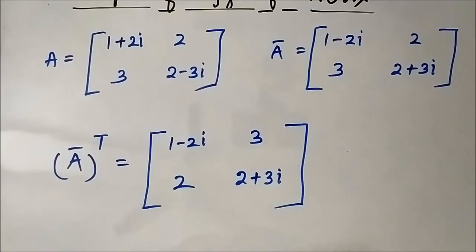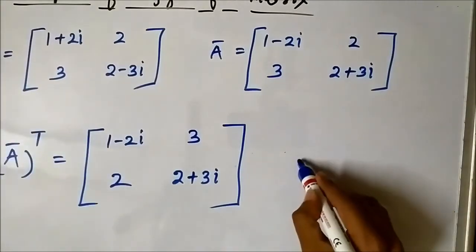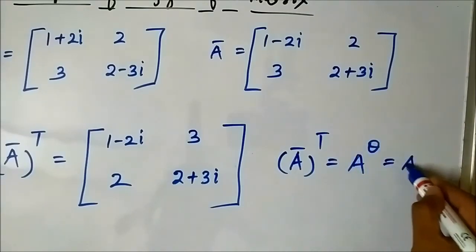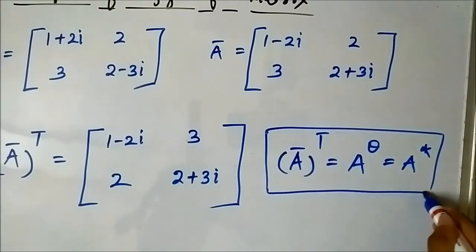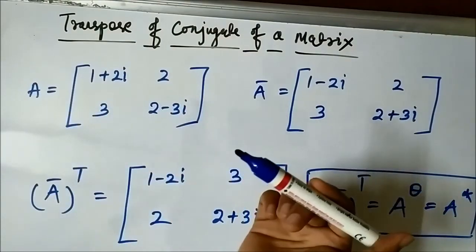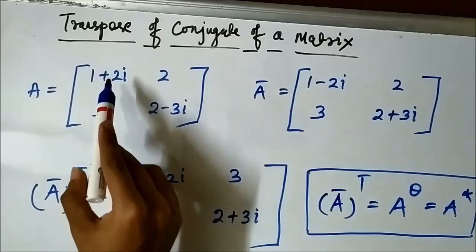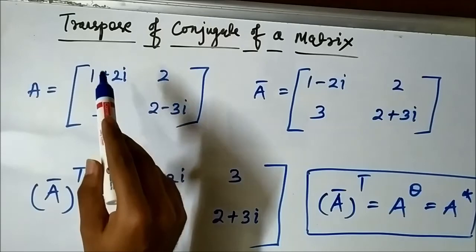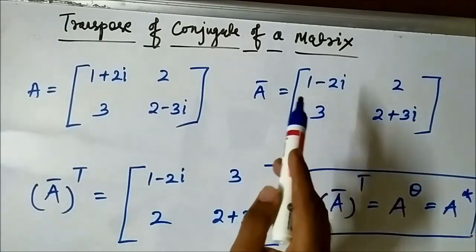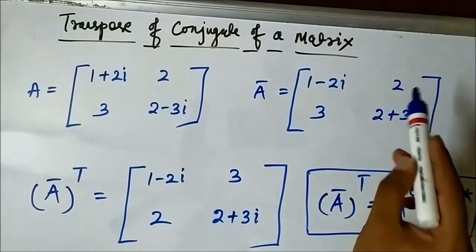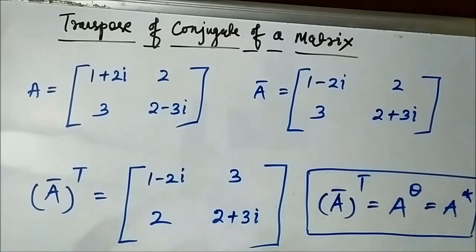This transpose of the conjugate can also be represented as A^θ or A*. They all mean the same thing: transpose of the conjugate of a matrix. To summarize: first determine the conjugate of each individual element (keep the real part as it is and invert the imaginary part), then use the transpose principle by interchanging the rows and columns. This is about the transpose of conjugate of a matrix. Thanks.